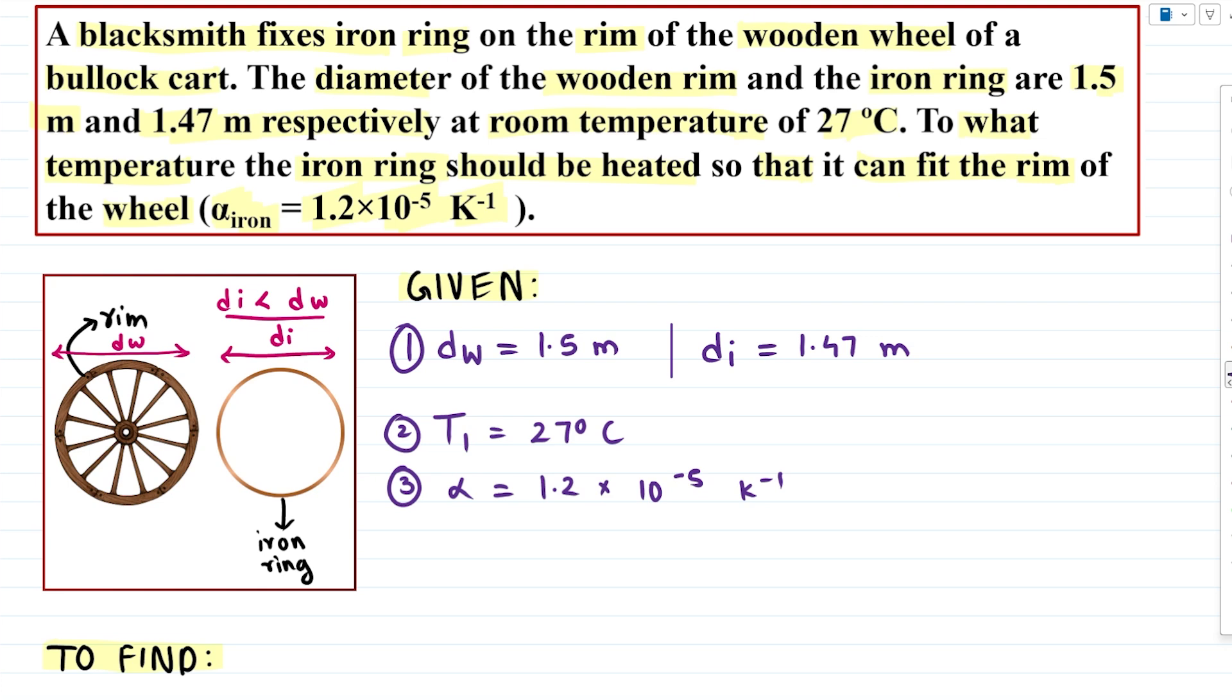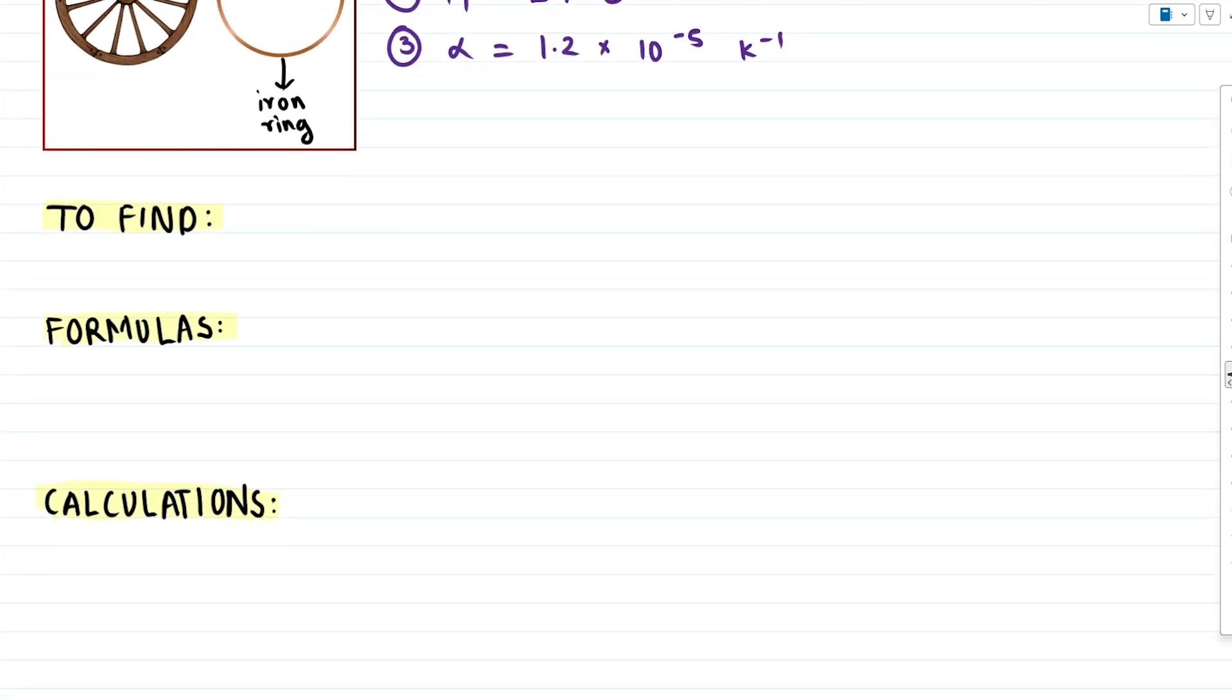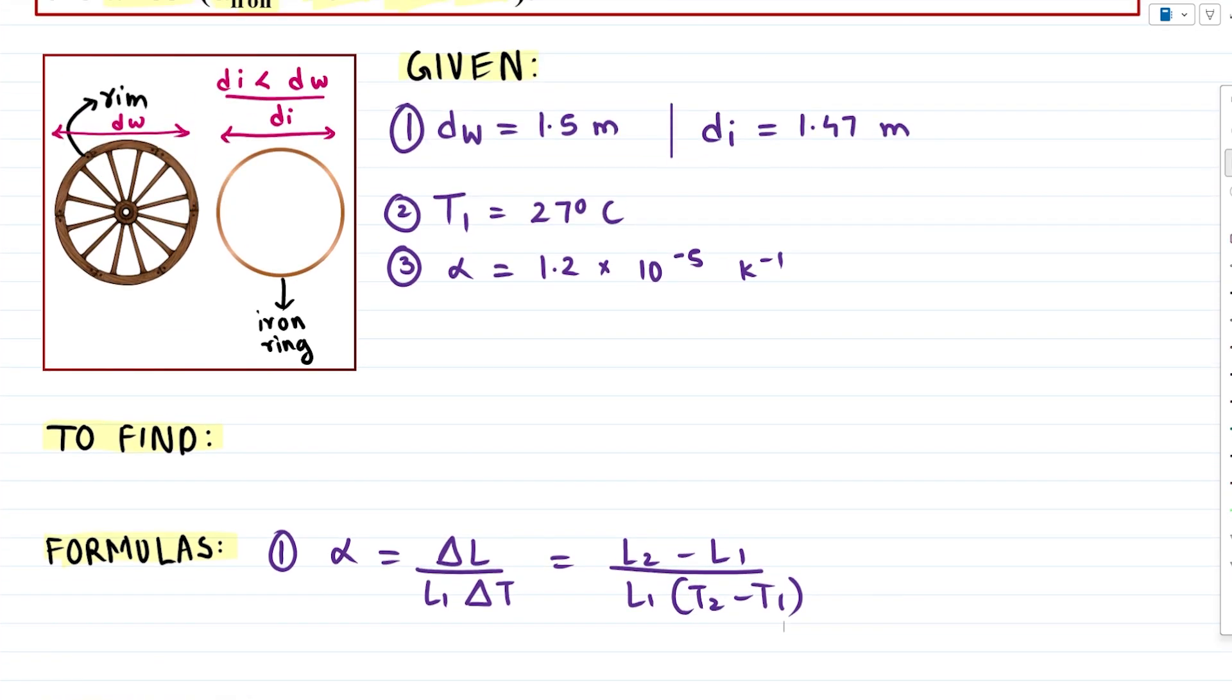Now the formula that we are going to use is the formula of linear expansion. So alpha equals delta L upon the original length into delta T, which in this context can be written as L2 minus L1 upon L1 into T2 minus T1. We have to find T2, that is the temperature.